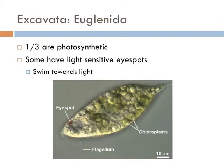Most euglenids are unicellular. Many have chloroplasts and produce energy through photosynthesis, but others feed through phagocytosis or strictly by diffusion. Some euglenas actually have a light-sensitive eye spot, which causes them to swim towards the light. So imagine a plant with eyes — that's kind of what a euglena is.